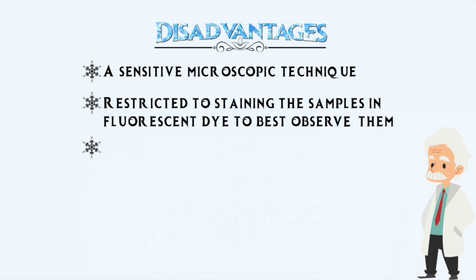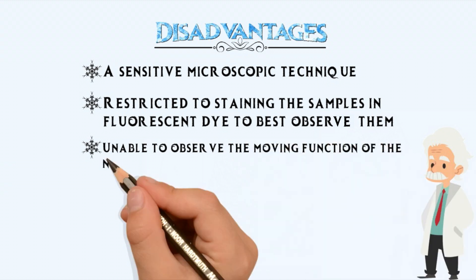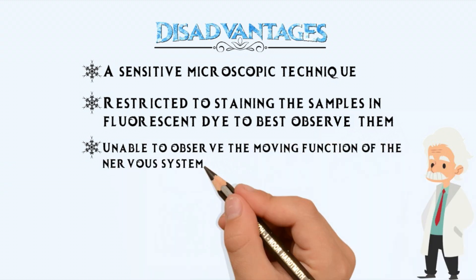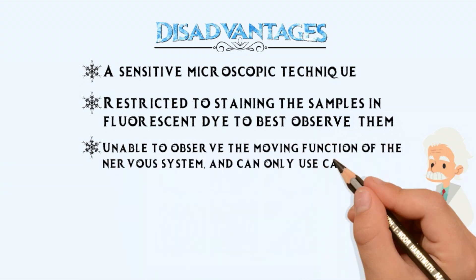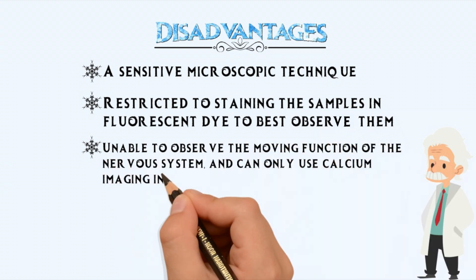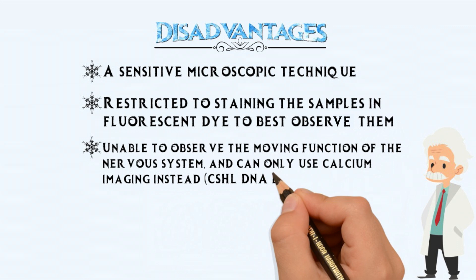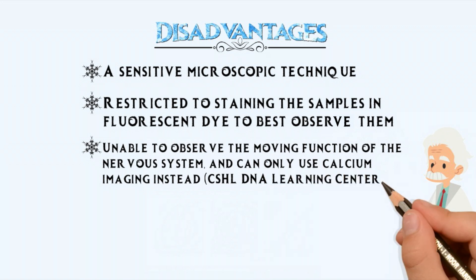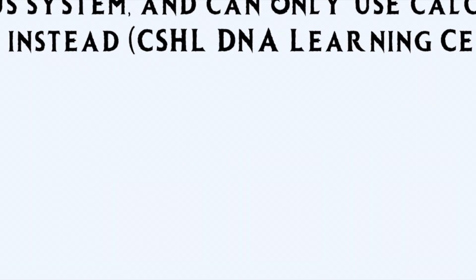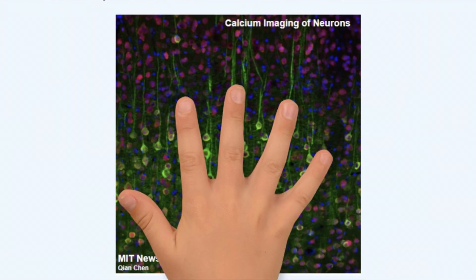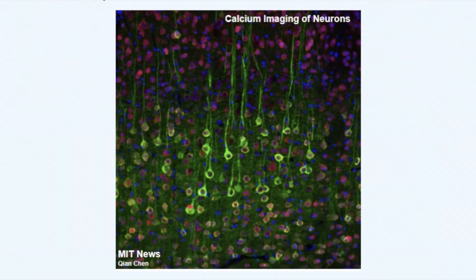CFM is also unable to observe the moving function of the nervous system, and can only use calcium imaging instead. Calcium imaging uses calcium in order to see the movement of the nerve cells, while GFP cannot be observed.